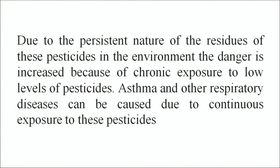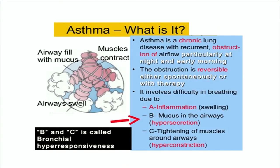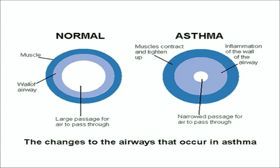A mother's occupational exposure to pesticides during pregnancy is associated with an increase in her child's risk of leukemia and brain cancer. Exposure to insecticides within the home and herbicides outside is associated with blood cancers in children. Due to the persistent nature of pesticide residues in the environment, the danger is increased because of chronic exposure to low levels of pesticides. Asthma and other respiratory diseases can be caused by continuous exposure to these pesticides. Asthma is a chronic lung disease with recurrent obstructions of airflow, particularly at night and early morning. The obstruction is reversible either spontaneously or with therapy. It involves difficulty in breathing due to inflammation, mucus in the airways and tightening of muscles around the airways. You can see the changes taking place in asthma in the airways in that image.